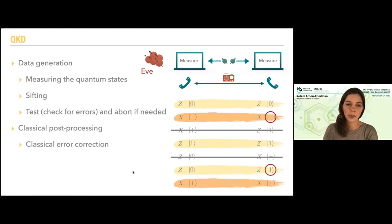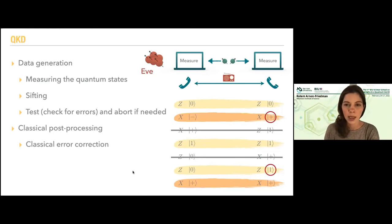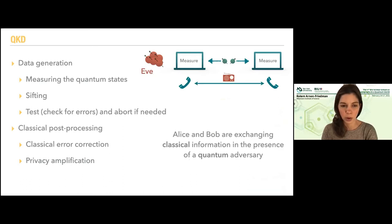The important part is that in both of these steps, Alice and Bob are exchanging classical information in the presence of a quantum adversary. She hears the information and has quantum states — she can use this information to try to extract information about the key from her states. In the privacy amplification step, let's say we have Alice's raw key — the raw data, this sequence of bits — and Eve has her quantum state.